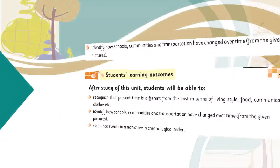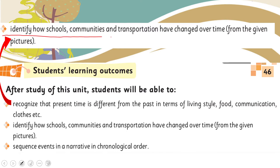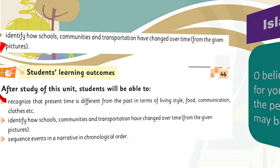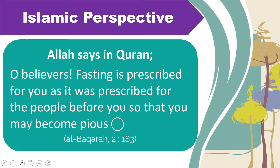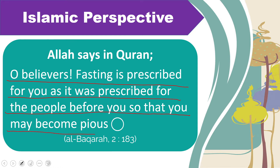In today's lecture, students will be able to identify how schools, community, and transportation have changed over time from given pictures. In the book, we are shown pictures comparing past and present times. As always, things change over time with technology, but religion will remain the same — we fast, we pray, we pay Zakat, we go to Hajj. All religious activities will remain the same and will not change with time.